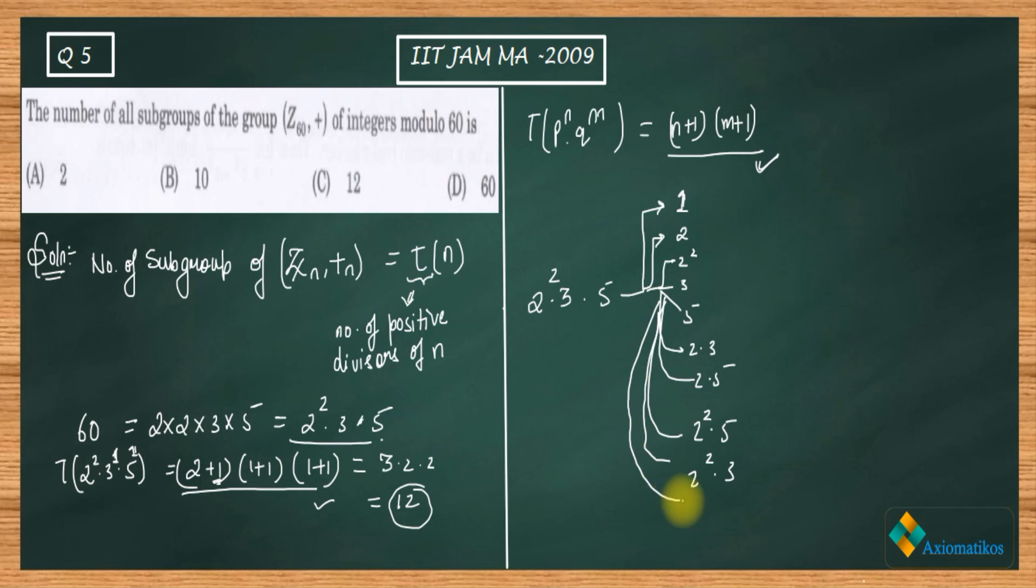What I have missed is 3·5, I have also missed 2·3·5, I have also missed 2²—the number itself. So these are the twelve divisors that we have.